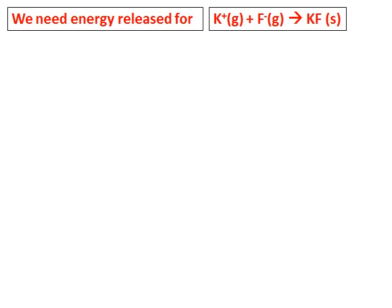Now let's see how we use this Born-Haber cycle to calculate the lattice energy of potassium fluoride. In other words, I need the energy released for the equation: K⁺ gas combining with F⁻ gas giving you KF solid. So let's first write down the equation for the heat of formation for potassium fluoride — that is K solid reacting with half of F₂ gas giving you KF solid. The heat of formation value is given there.